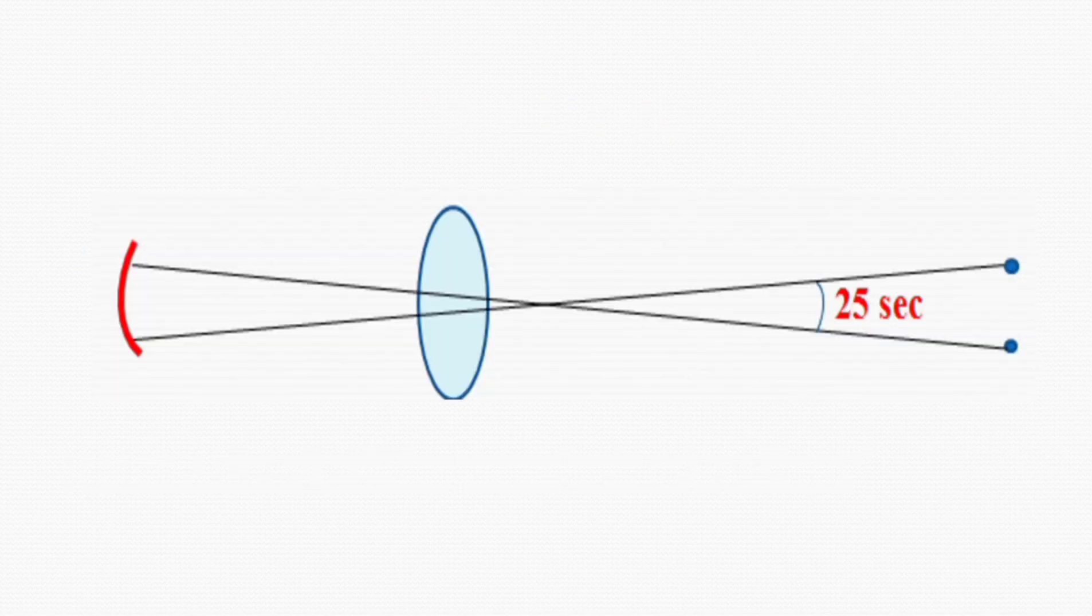Now the normal visual acuity of the human eye is about 25 seconds of the arc. It means when the light rays from two separate points strike the eye with an angle of at least 25 seconds between them, then they can be perceived or recognized as two points instead of one.